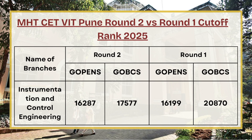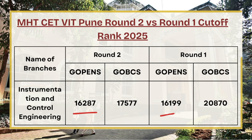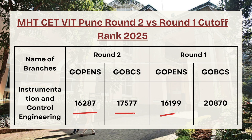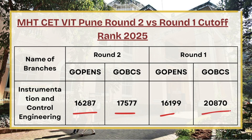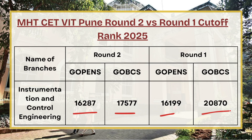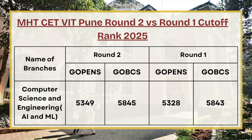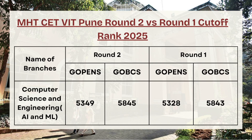Moving ahead, we have Instrumentation and Control Engineering. For G Open category in round two, the cutoff rank was 16,287 whereas in round one it was 16,199. For G OBC, the cutoff rank was 17,577 in round two whereas in round one it was 20,870 — so the cutoff rank has dropped between round one and round two. Candidates can expect the round three G OBC cutoff to be between 17,000 to 19,000.